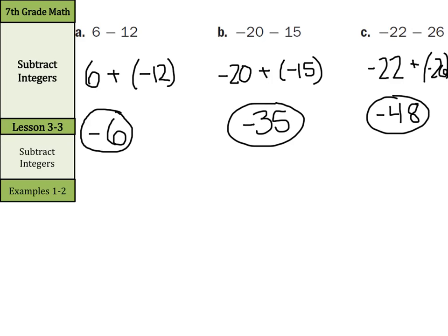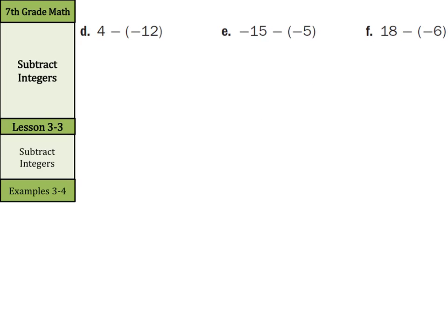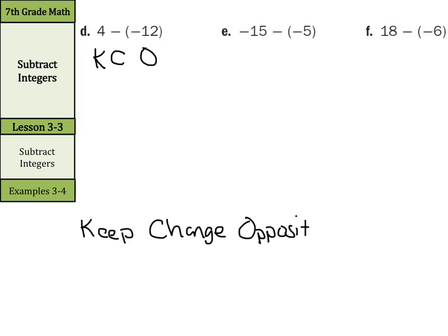When we subtract integers, we're really doing addition with the opposite. For example, 4 minus negative 12: keep the 4, change the subtraction to addition, and the opposite of negative 12 is positive 12. Same signs — 4 plus 12 is 16.